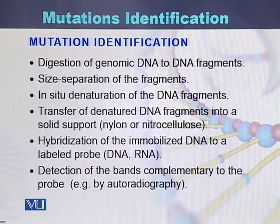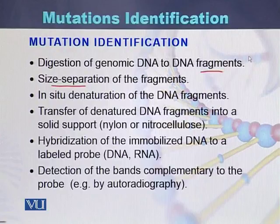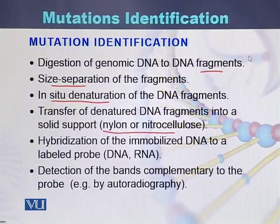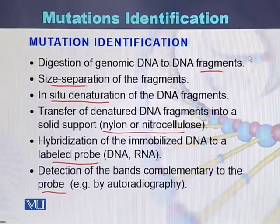This is the procedure for how mutations are identified. The DNA is digested into small fragments. Once digested, those fragments are separated based on size. Then there is in-situ denaturation of the DNA fragments. The denatured fragments are transferred to a membrane — either nylon or nitrocellulose. Once the denatured DNA is transferred onto the membrane, there is hybridization of the DNA to a labeled probe, and detection of the bands complementary to the probe is performed with the help of autoradiography.